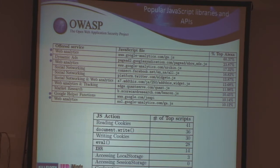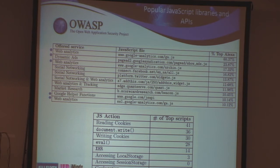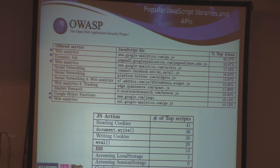Can we differentiate between benign and malicious JavaScript? This is interesting — when we think about malicious JavaScript, maybe they have certain patterns: using eval, reading cookies, doing other unexpected things. But looking at the top 100 scripts evaluated, 40% of them are actually reading cookies, writing cookies, and using eval. So it's really, really hard to differentiate between benign and malicious JavaScript, and this is an ongoing area of research.